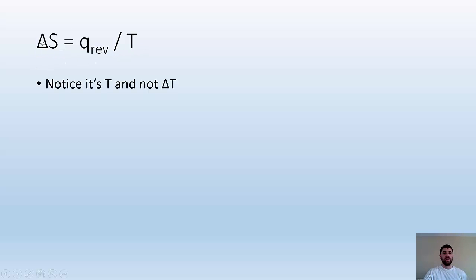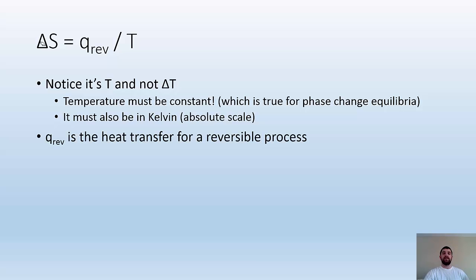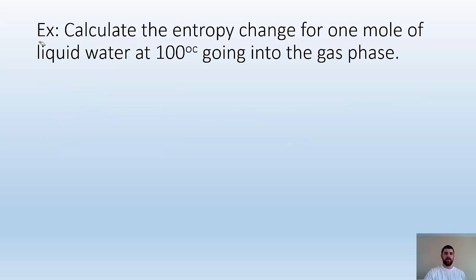We're going to look at phase change equilibrium. So we get this equation. This is the equation we're going to want to use. Delta S equals Q rev divided by T. Notice it's T and not delta T because temperature must be constant, which is true for phase change equilibrium. If you got a solid and you heat it up till it starts melting, once it's at that melting point, it stays at that temperature until all of it's melted.